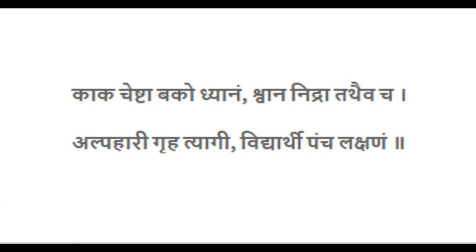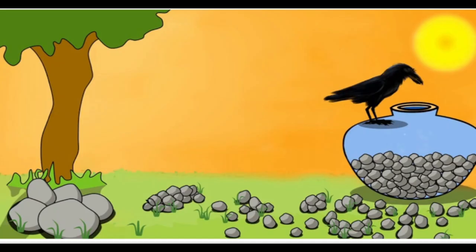The first word is 'kakacheshta,' which means the efforts of a crow. All of us in our childhood have read the story of a crow — it was thirsty and wanted some water. Finally, it found a pot of water, but the water was very low at the bottom. The crow could only drink if the water rose to the neck of the pot.